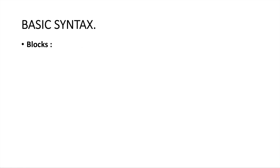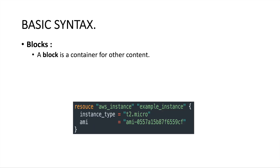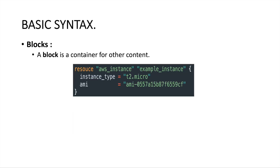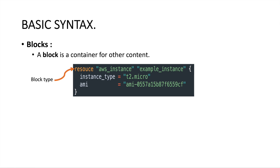The next main component is the block. A block is where we specify what resource type we want to create and all the other information we want to provide. Here the block type that you see — for example, I'm creating a resource block. Likewise, we also have a provider block, a module block, a data block, and many different types of blocks. This is what we use to specify what type of block we are going to use, and then here we have the labels — for example, aws_instance and example_instance.